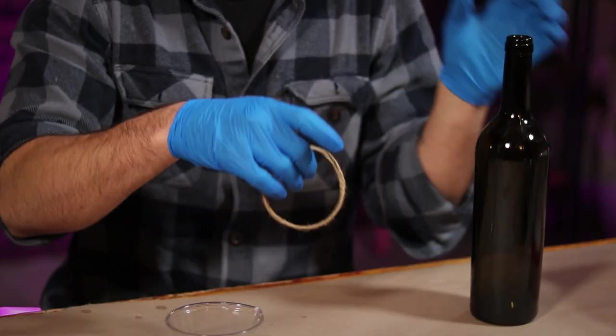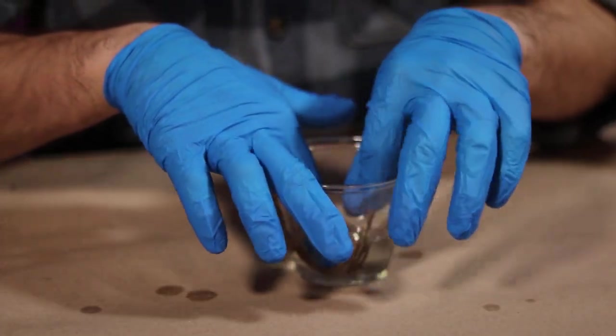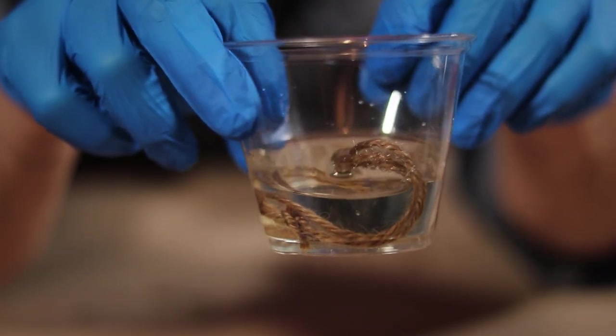For this next bit, you're going to want to put on some gloves. Now slide those rings of cordage you made off of your bottle, trying to keep them in shape. Then submerge them completely into your accelerant and let them soak for about a minute.